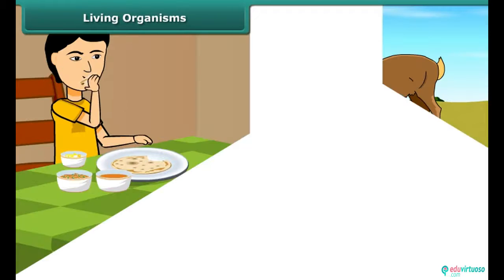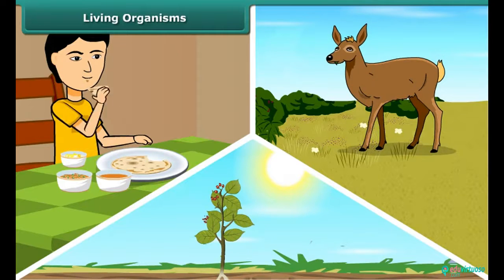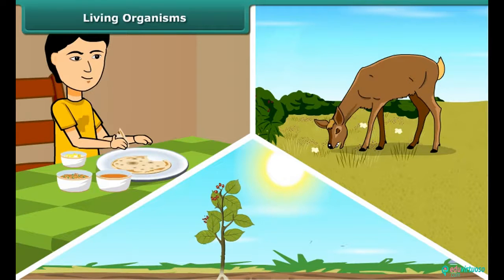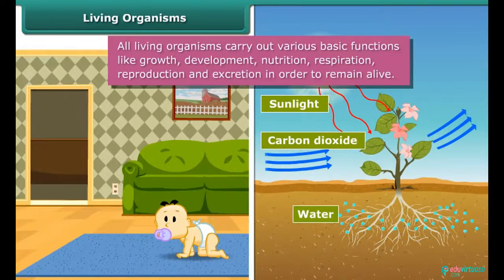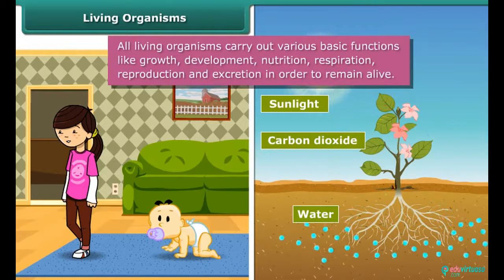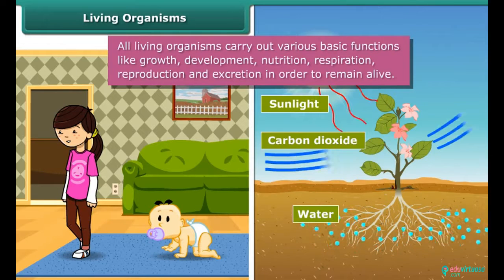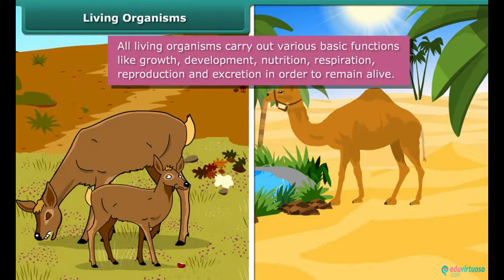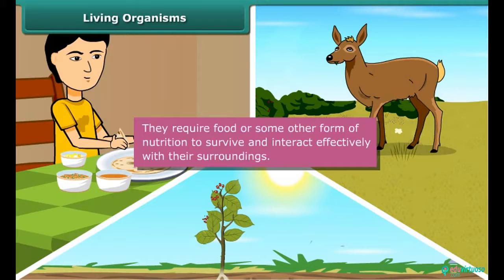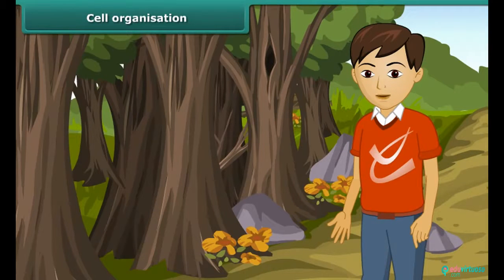Living organisms — human beings, animals, and plants — require food to survive in their surroundings. They show great divergence in their physical appearance, but they all grow and develop during their life cycle. All living organisms carry out various basic functions like growth, development, nutrition, respiration, reproduction, and excretion in order to remain alive.